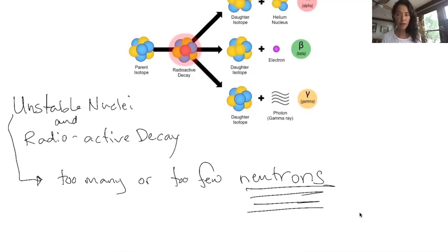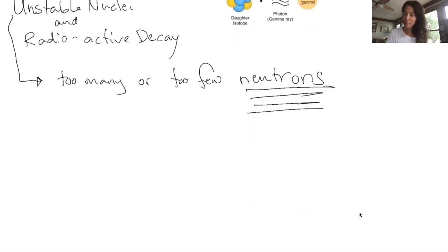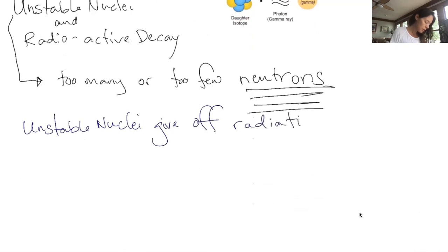In nature, whenever anything is unstable, it always aims to find stability, right? Just like people, well, ideally. So what do these unstable nuclei do to find stability? Well, in simple terms, they give off radiation. Unstable nuclei give off radiation in effort to become stable.